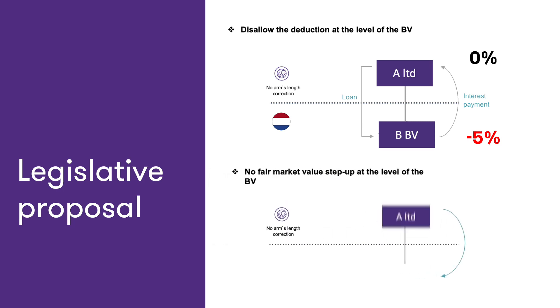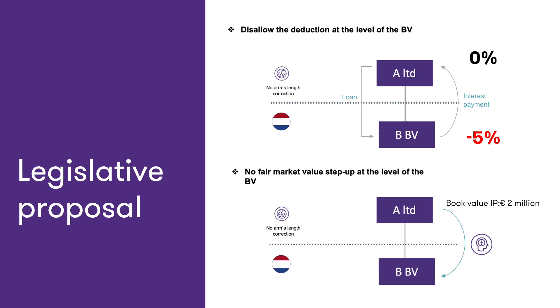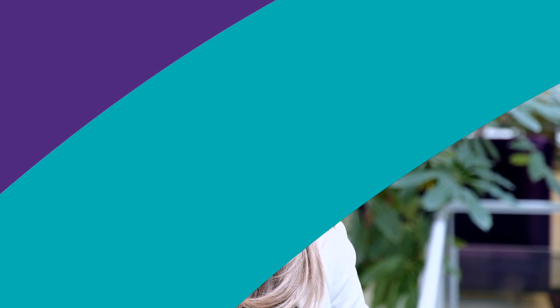In the second example of this slide, the Netherlands will refuse the fair market value step-up of the BV. In order to benefit from the downwards adjustment, the Dutch corporate income taxpayer must demonstrate that there is a corresponding upwards adjustment and that this adjustment is included in the taxable base of the counterparty.